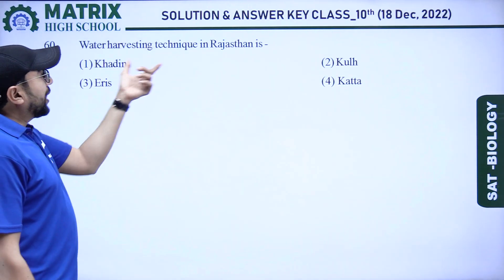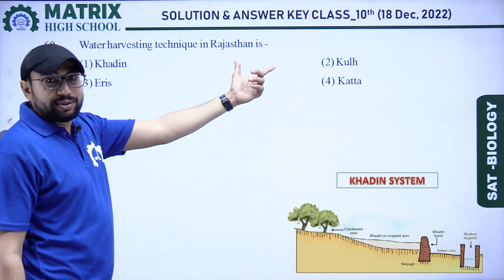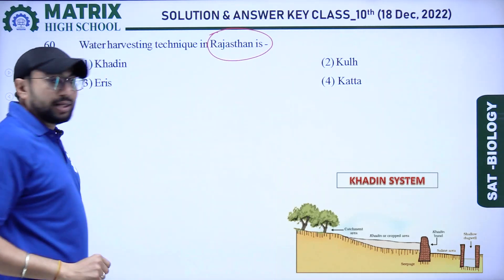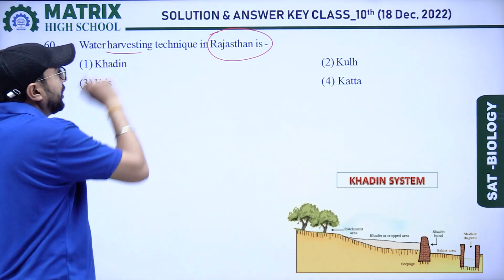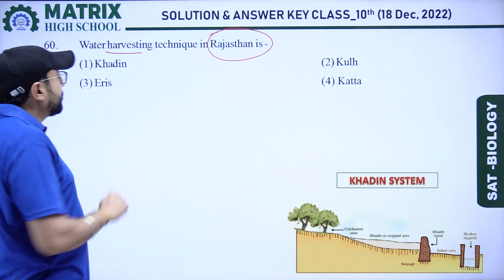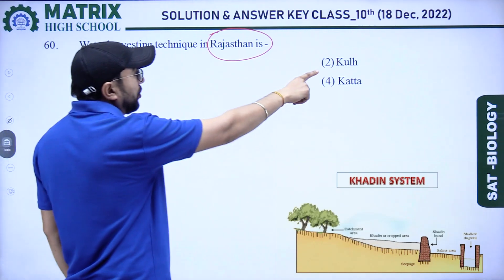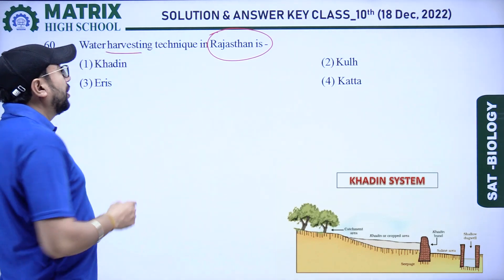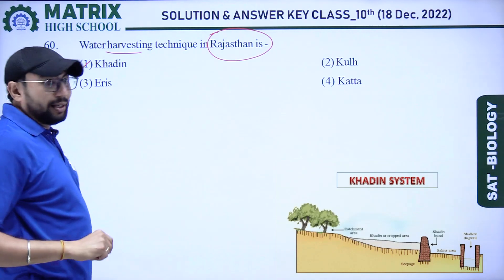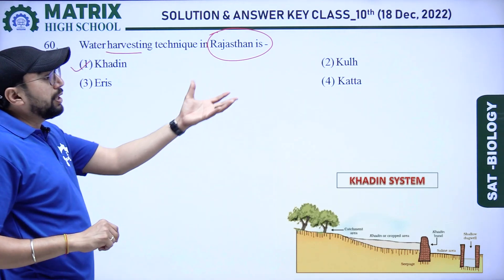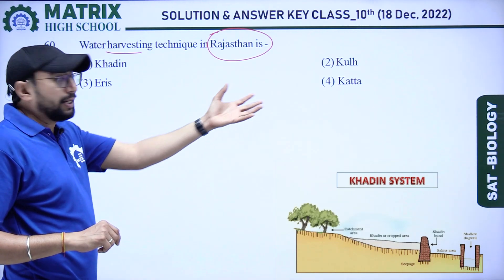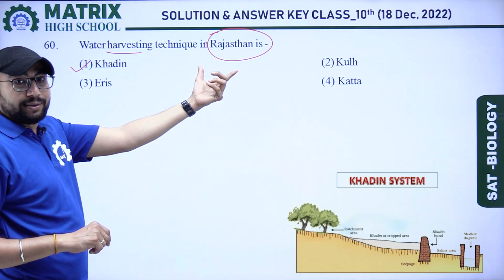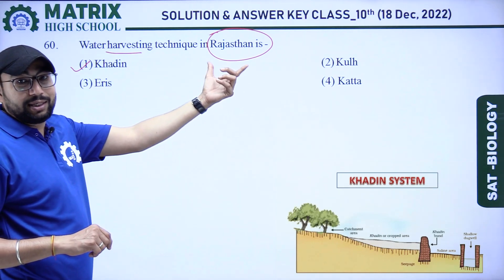Next question: the water harvesting technique in Rajasthan is? Options: khadheen, kulae, eris, and katta. Our right answer is khadheen, because the other options belong to different states, but khadheen is related to Rajasthan.